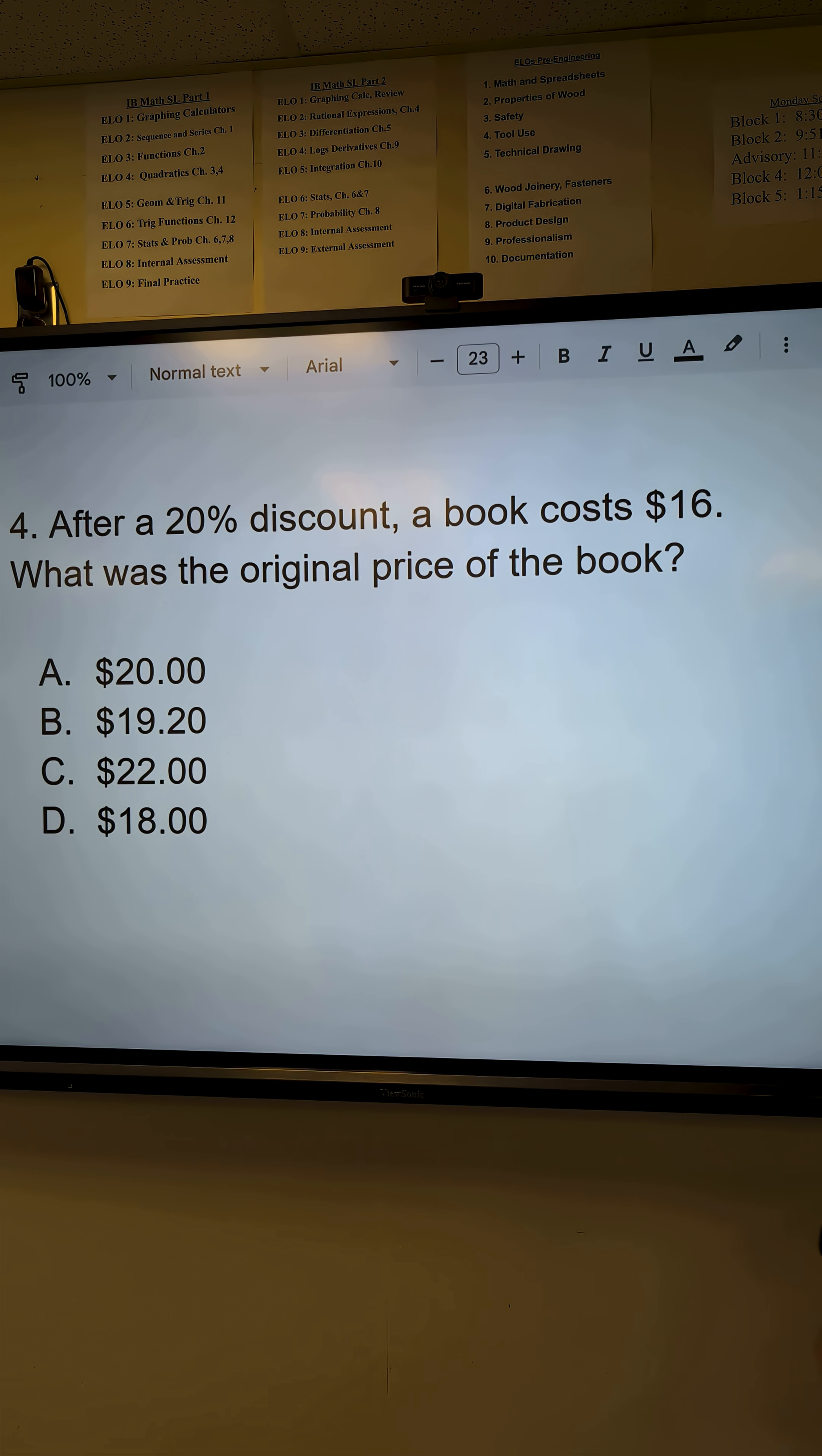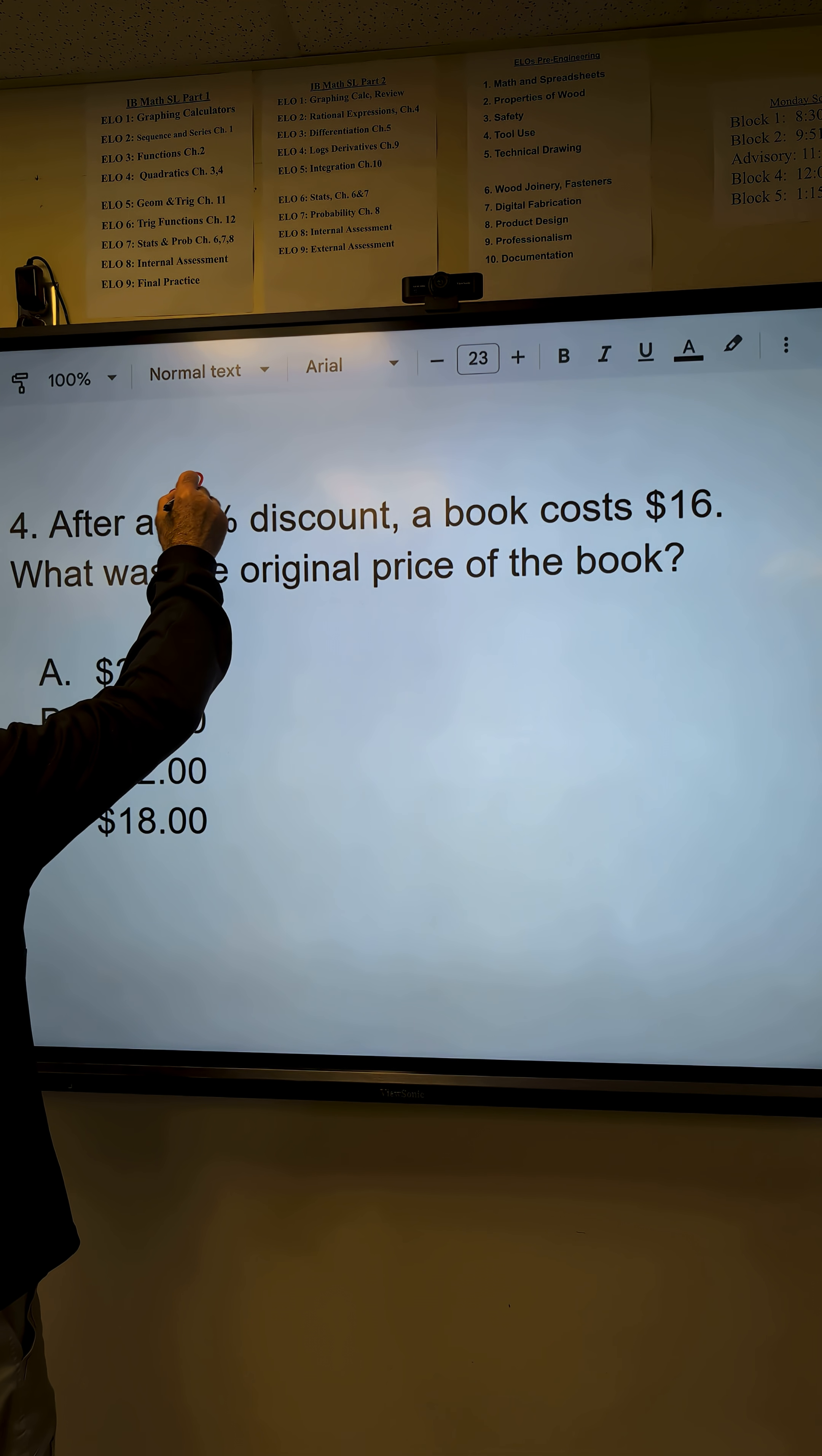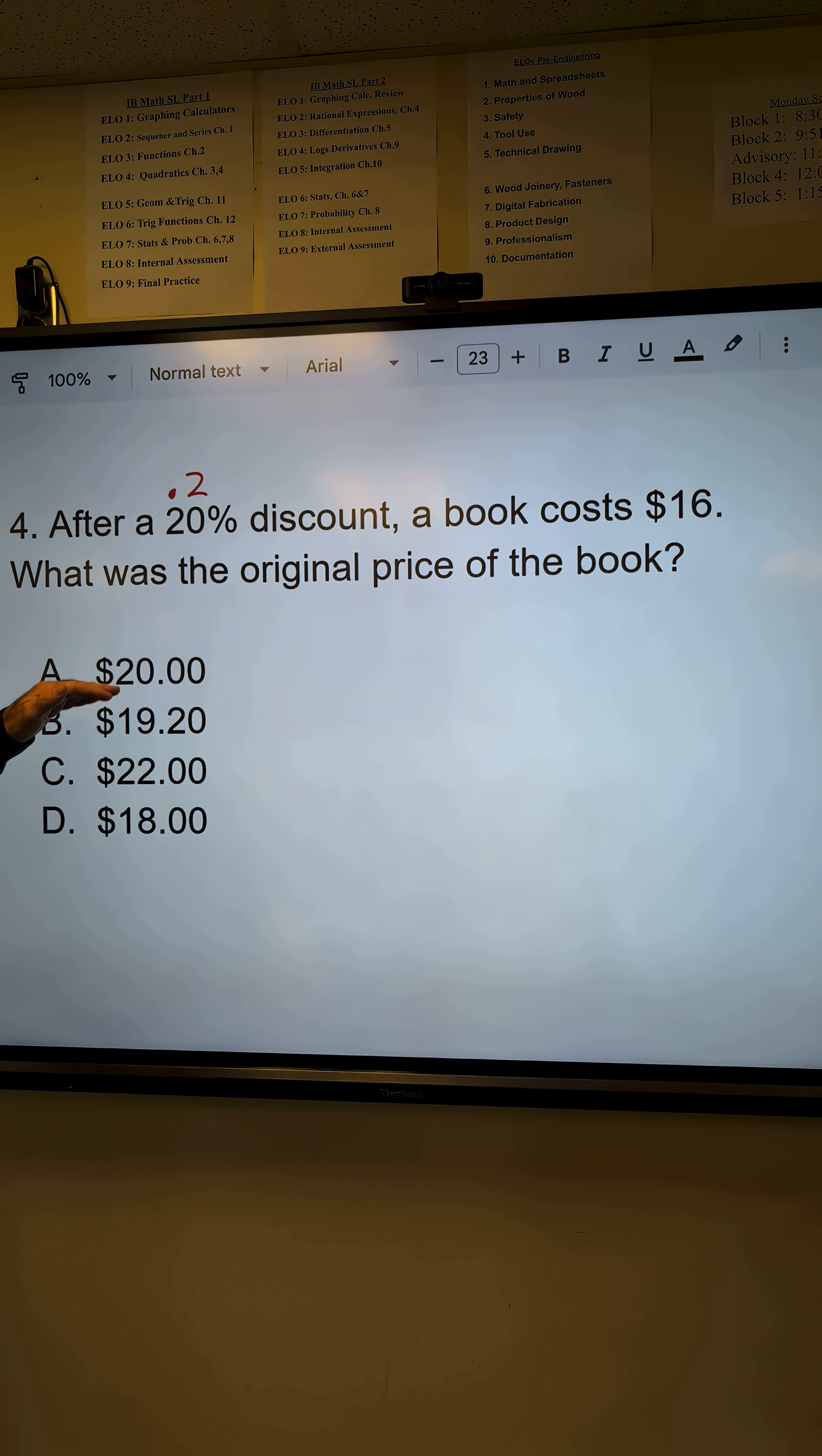You could use elimination. I'm going to do this one algebraically. After a 20% discount, so that's the equivalent of .2 as a decimal, a book costs $16.